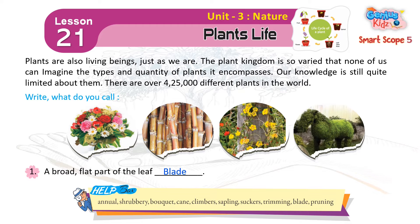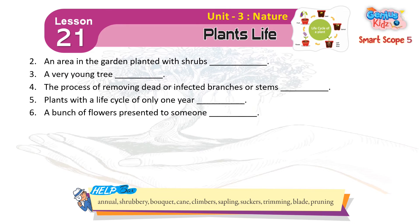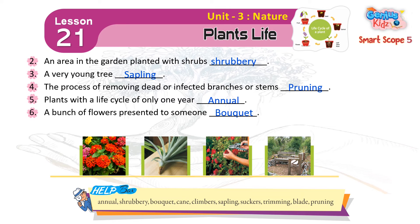1. What do you call a broad, flat part of the leaf blade? 2. An area in the garden planted with shrubs — shrubbery. 3. A very young tree — sapling. 4. The process of removing dead or infected branches or stems — pruning. 5. Plants with a life cycle of only one year — annual.